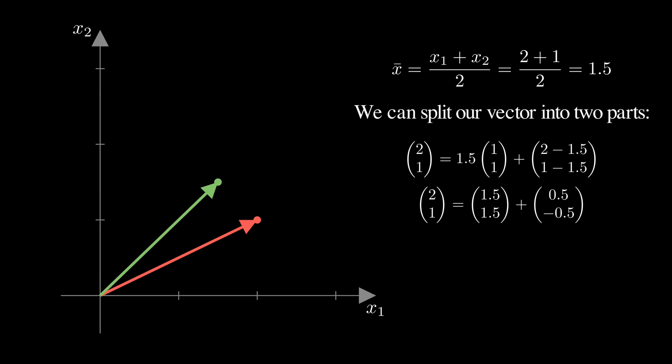And the residual vector? That contains the differences between each data point and the mean. So x1 minus 1.5 gives us 0.5 and x2 minus 1.5 gives us negative 0.5.